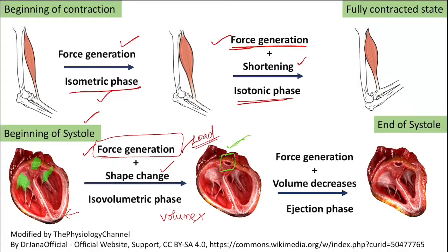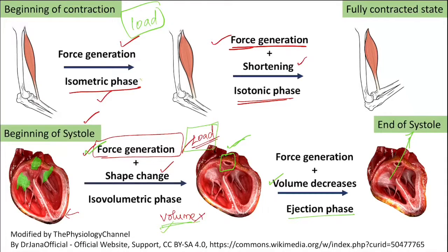Only when force production is higher than the afterload does the outlet open — the pulmonary valve of the right ventricle and the aortic valve of the left ventricle. Once open, it goes into the ejection phase and blood flows out into the pulmonary artery and aorta, and the volume decreases. But in the first phase, until the load is overcome, only force is generated with no decrease in the volume of the chamber — similar to the isometric phase in skeletal muscle.